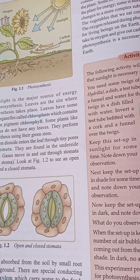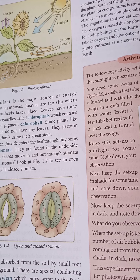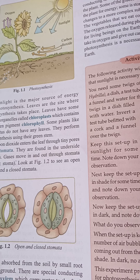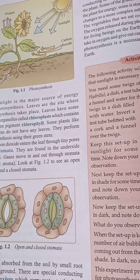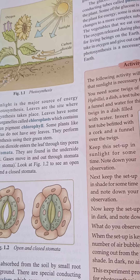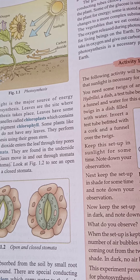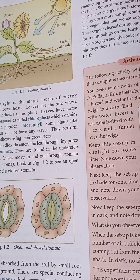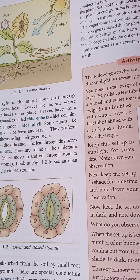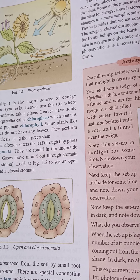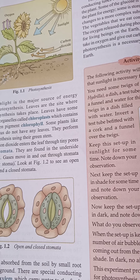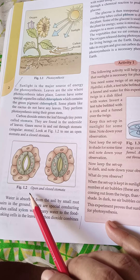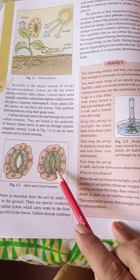On the surface of leaves there are pores which cannot be seen by our naked eyes, but you can see them under a microscope. These pores are called stomata. Carbon dioxide enters the leaves through stomata. Gases — carbon dioxide and oxygen — and excess water move in and out through stomata. These pores can be open and closed. You can see figure 1.2 showing open and closed stomata.